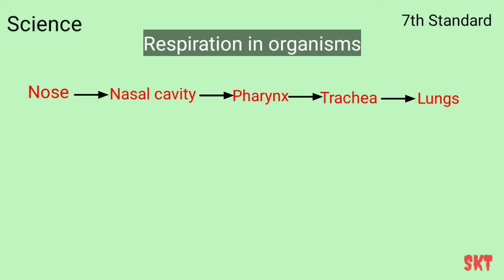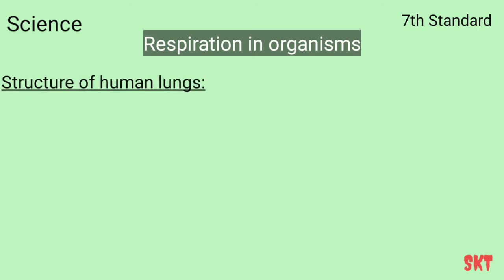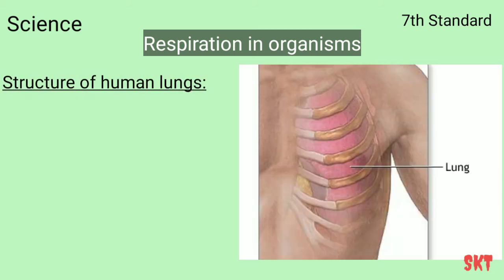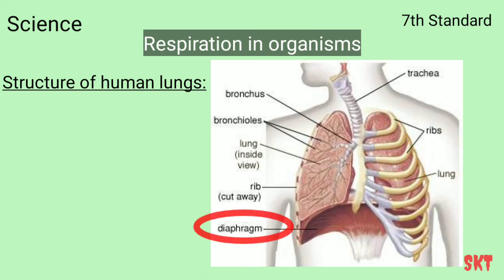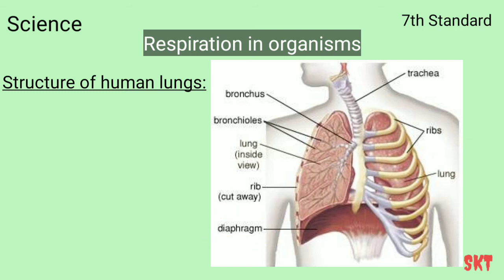Let us study the structure of our lungs. Lungs are present in the chest cavity, which is surrounded by ribs on the sides — you can feel the ribs on your chest. A large muscular sheet called the diaphragm forms the floor of the chest cavity, below the lungs. So our lungs are covered by ribs that we can feel in our chest, and are supported below by the diaphragm, a muscular sheet beneath the lungs.